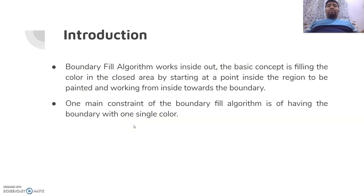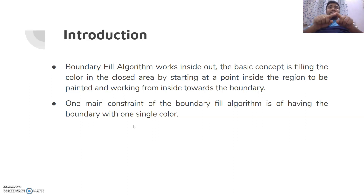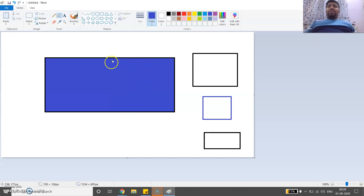So what is boundary fill algorithm? It works inside out. The basic concept is filling the color in a closed area by starting at a point inside the region to be painted and working from inside towards the boundary. Now in this algorithm we have one main constraint: the entire boundary must be of one single color. We saw that we should have a boundary of one particular color — in this case the boundary is black.